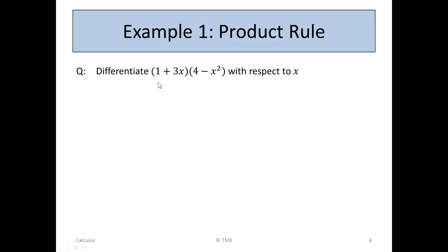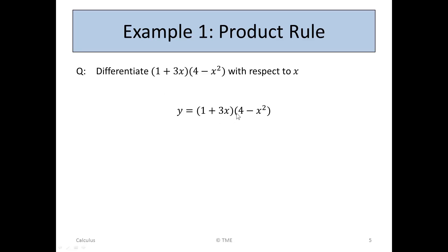Let's take an example with the product rule. Differentiate (1 + 3x)(4 − x²) with respect to x. We could simply multiply this out to create an expanded term with x's, x squareds and x cubeds, and then differentiate it. But in this case, we're going to do it using the product rule. So we write y = (1 + 3x)(4 − x²).